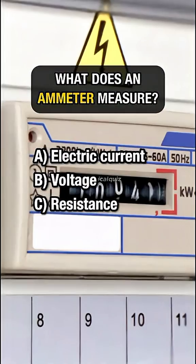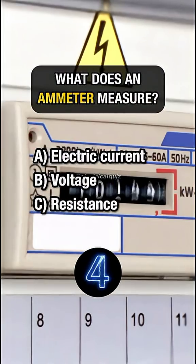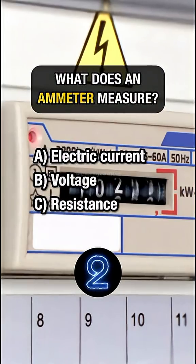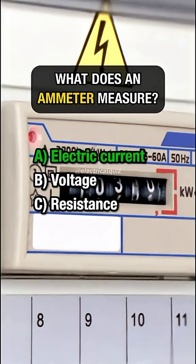What does an ammeter measure? Answer: A. Electric current.